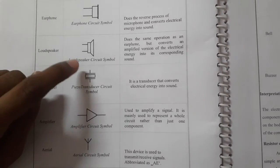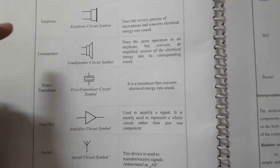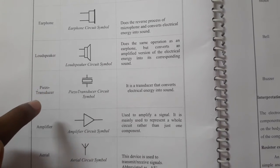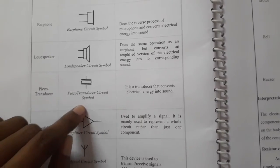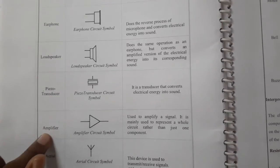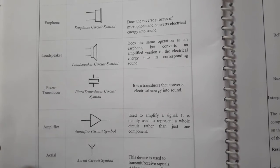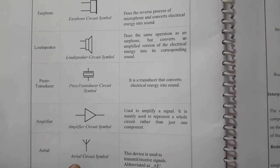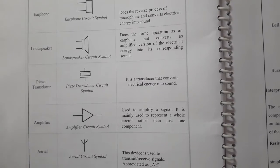Next is the loudspeaker — this is the symbol. The loudspeaker operation is the same as earphones; it converts electrical energy into sound energy. Next is the amplifier — this is the circuit symbol. An amplifier is used to amplify a signal. Next is the aerial — this is the circuit symbol. This device is used to transmit and receive signals.